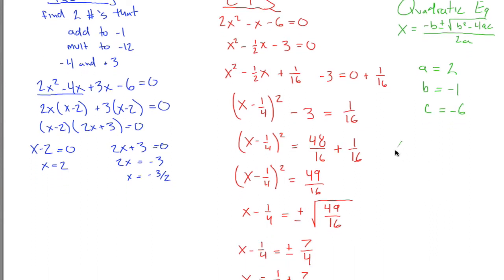Plugging those values in, I get x = [-(-1) ± √((-1)² - 4(2)(-6))]/(2(2)) = [1 ± √(1 - 4(2)(-6))]/4. If you do 4 times 2 times -6, you get -48. So 1 minus -48 is the same as 1 + 48, which is [1 ± √49]/4.